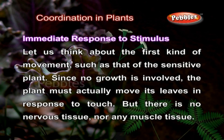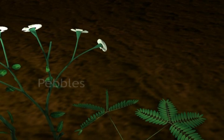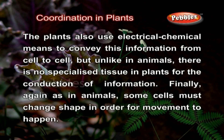Immediate response to stimulus. Let us think about the first kind of movement, such as that of the sensitive plant. Since no growth is involved, the plant must actually move its leaves in response to touch. But there is no nervous tissue nor any muscle tissue. If we think about where exactly the plant is touched and what part actually moves, it is apparent that movement happens at a point different from the point of touch. So, information that a touch has occurred must be communicated. Plants also use electrical and chemical means to convey this information from cell to cell, but unlike in animals, there is no specialized tissue in plants for the conduction of information. Finally, as in animals, some cells must change shape for movement to happen.